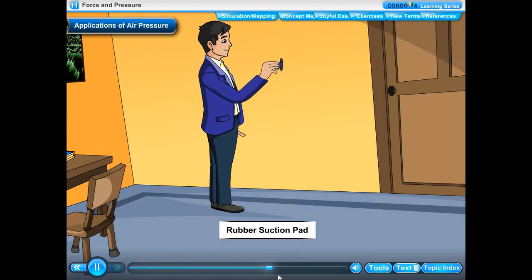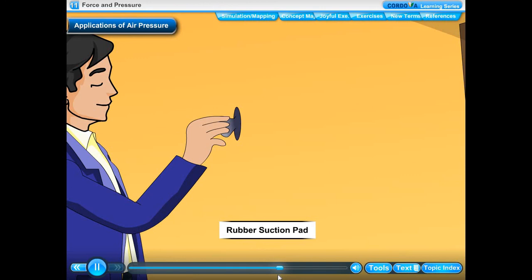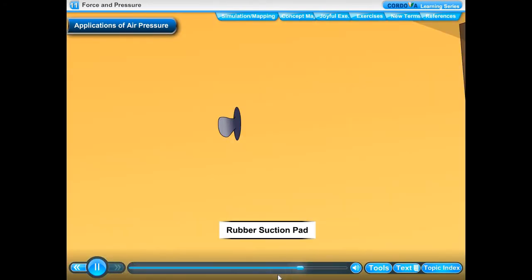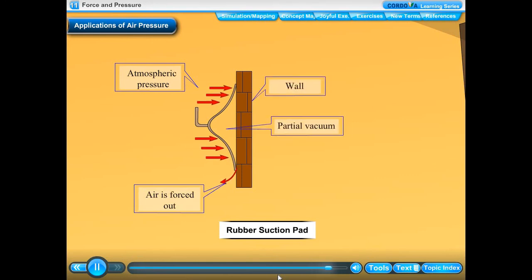Rubber suction pad. Rubber suction pads are used on walls to hang clothes and calendars. When a moistened rubber suction pad is pressed against the wall, the air between the suction pad and the wall is forced out, reducing the pressure inside. The outer atmospheric pressure being greater pushes the suction pad firmly and it adheres to the surface of the wall.